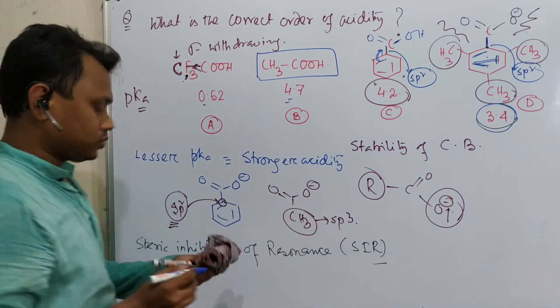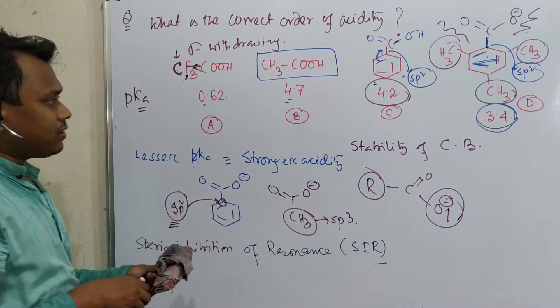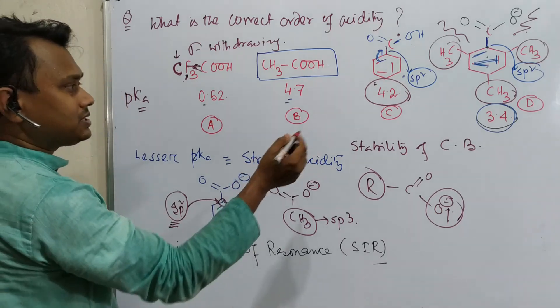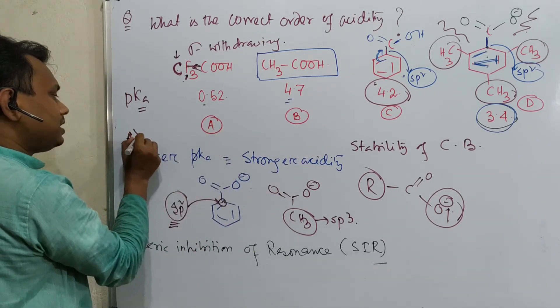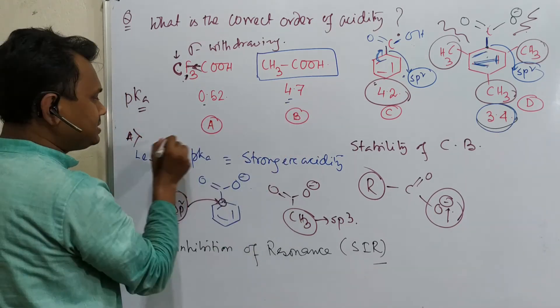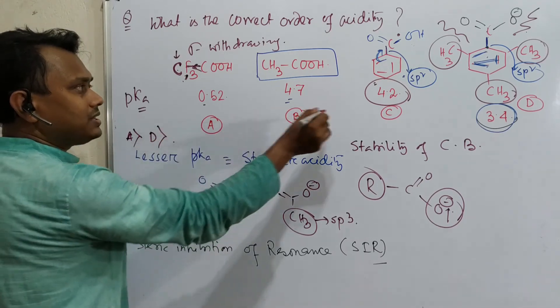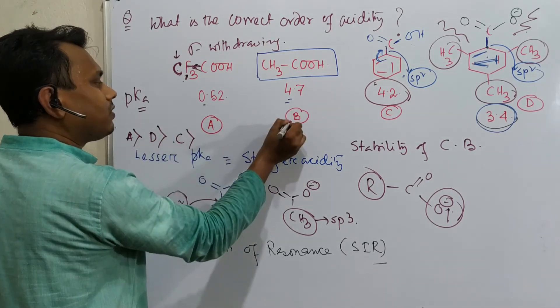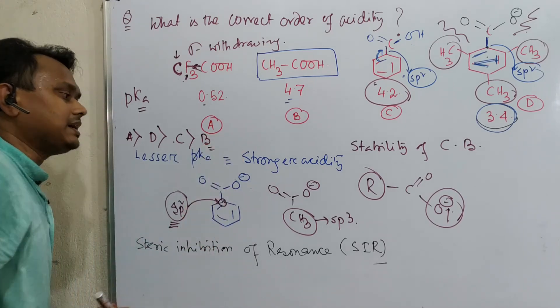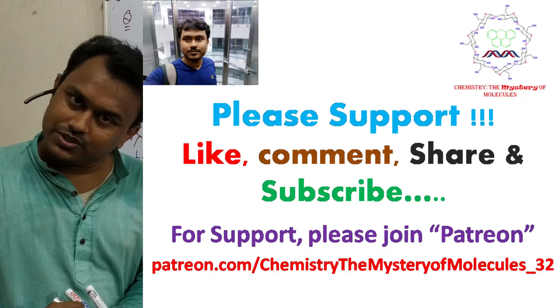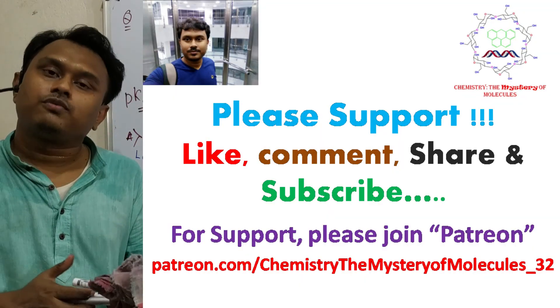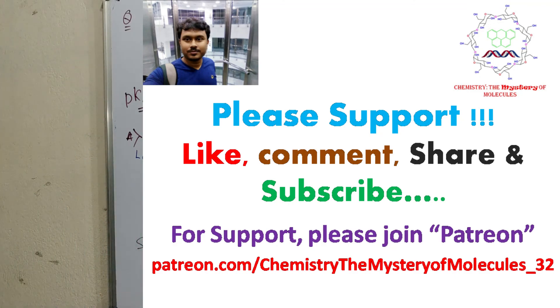So this is the overall discussion. So the order, if I say what is the order? Order is most acidic is A, then D, then C benzoic acid, then B. And the fourth option is the right answer. So this is the end of this discussion. Thank you everyone for watching this. Stay happy, stay blessed. See you in my next video.